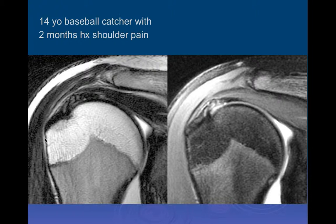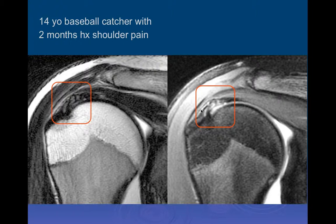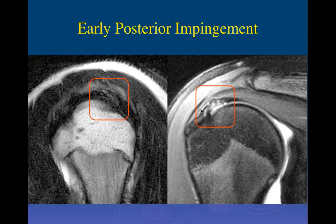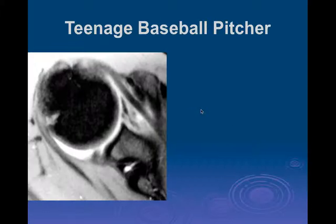Here are coronal images of the same young baseball pitcher. We can see changes within the rotator cuff near the intersection posteriorly of the supraspinatus and part of the infraspinatus, with fraying of the inferior part of the cuff where it gets caught up in this mechanism. This is really severe tendinosis in a very focal location - not in the typical location we see in other causes of tendinosis, which is more anterior in the mid-portion.